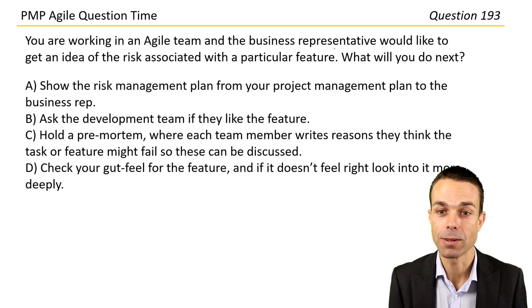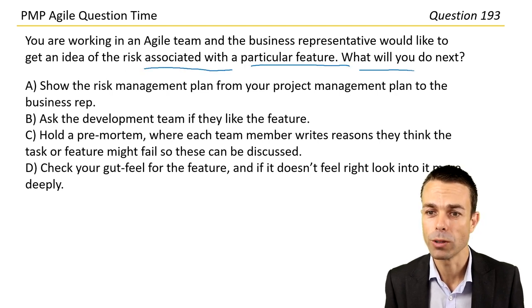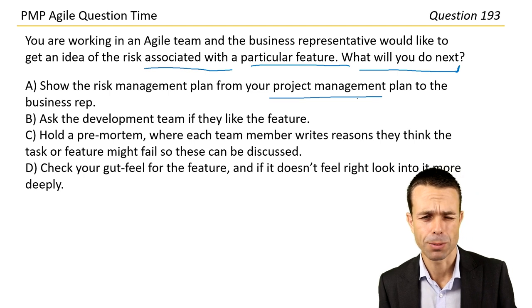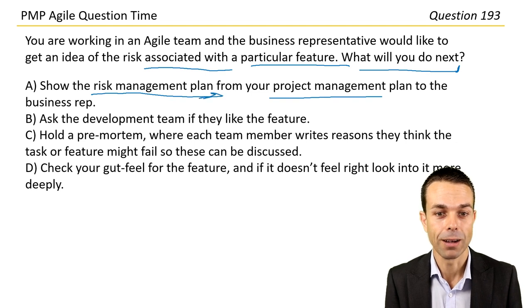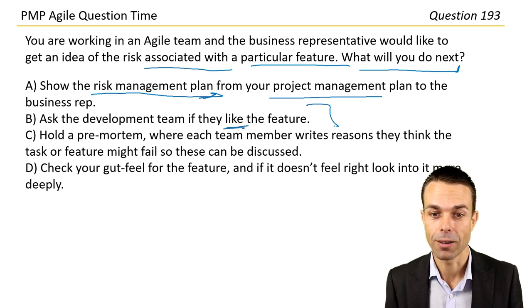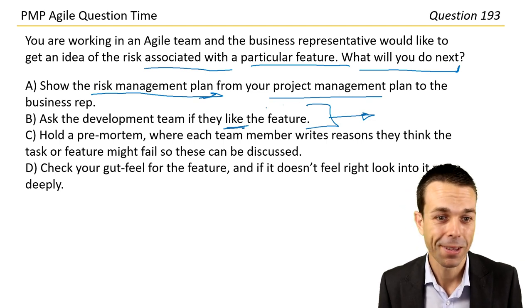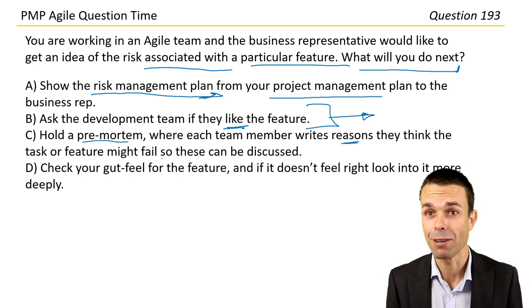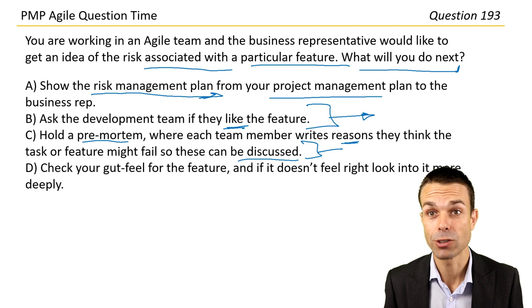You're working in an Agile team and the business representative would like to get an idea of the risk associated with a particular feature. What will you do next? Show the risk management plan — that's more of a waterfall approach. Ask the development team if they like the feature — probably not specific around risk. Hold a pre-mortem where each team member writes reasons they think the task or feature might fail, so these can be discussed. Yes, this is an excellent answer — it's really just a risk brainstorming session.